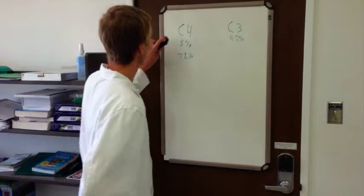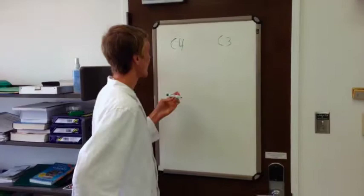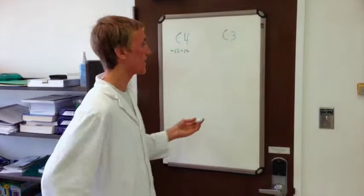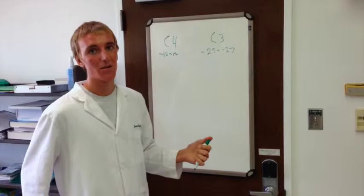So for C4 plants, their stable isotope signature is about negative 10 to negative 12, which we record as delta values. You don't really need to know what these mean, you just need to know that they're different. With C3 plants, the delta values are in the negative 25 to negative 27 range, somewhere around there. So there's a difference between the two, and we can measure that on our mass spec.